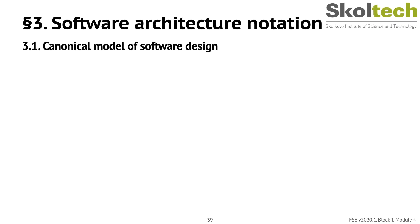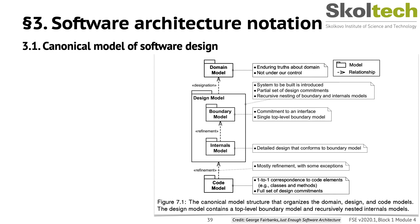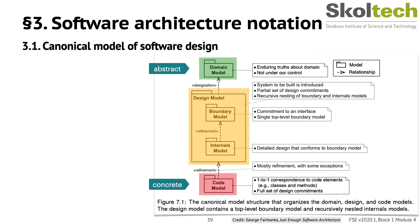The canonical model structure provides a standard way to organize and relate the facts you encounter. Its essence is simple: models range from abstract to concrete, and it uses views to drill down into the details of each model. There are three primary models: the domain model, the design model, and the code model. The canonical model structure has the most abstract model — the domain — at the top and the most concrete — the code — at the bottom.